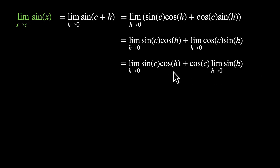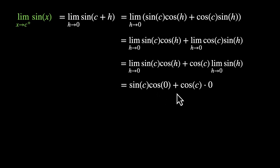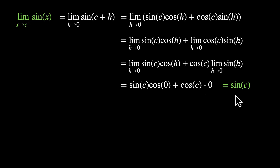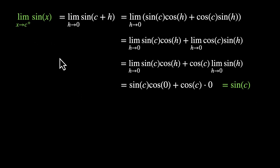And cos(h) approaches cos(0) which is 1. So this becomes sin(c) · cos(0) + cos(c) · 0, which is sin(c) · 1 + 0 = sin(c). So we've proved that at any point c, the right-hand limit is actually equal to the value of the function, which is sin(c). We'll have very similar steps for the left-hand limit — pause the video and practice that on your own.